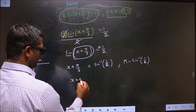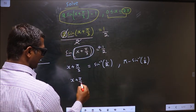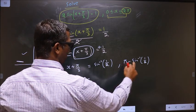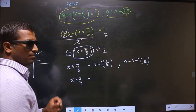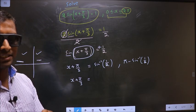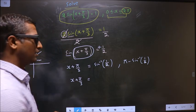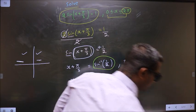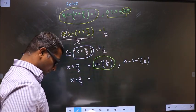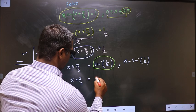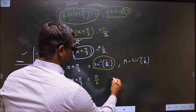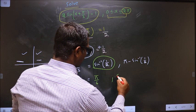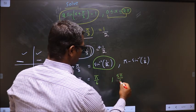So now x + π/3 equals these values. Before you calculate, make sure your calculator is in radians mode. Put sin⁻¹(1/2) in the calculator — you should get π/6. Put π − sin⁻¹(1/2) in the calculator — you should get 5π/6.